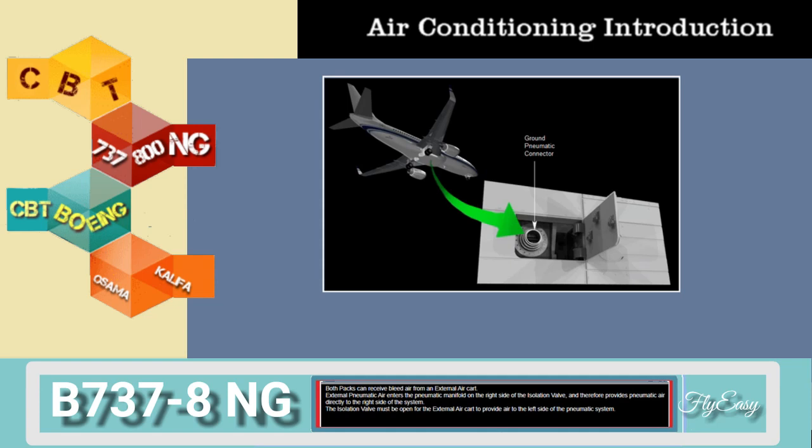Both packs can receive bleed air from an external air cart. External pneumatic air enters the pneumatic manifold on the right side of the isolation valve, and therefore provides pneumatic air directly to the right side of the system. The isolation valve must be open for the external air cart to provide air to the left side of the pneumatic system.